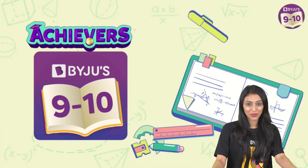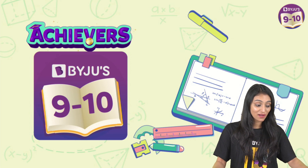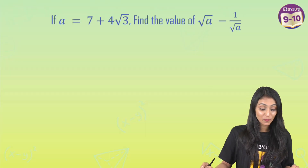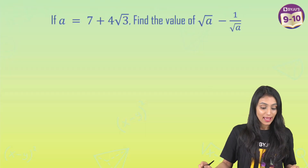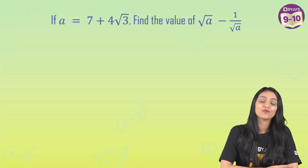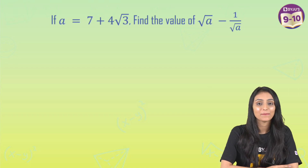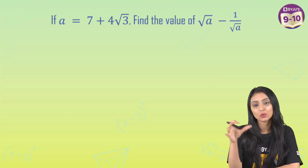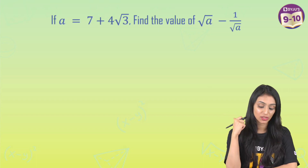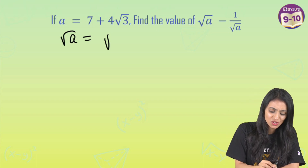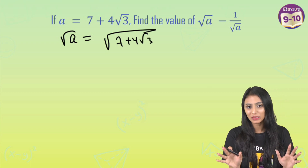Hey students, welcome to the video. Today we have come up with the solution of the question that we shared with you. If a is equal to 7 plus 4 root 3, find the value of root a minus 1 by root a. One way students approach this question is they think let's first find out root a — that's going to be the square root of 7 plus 4 root 3.